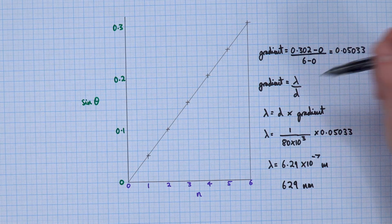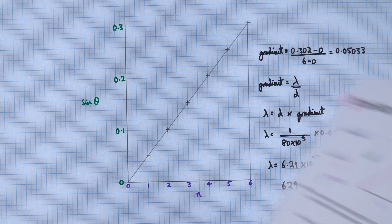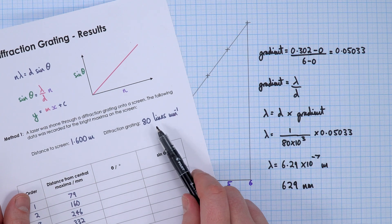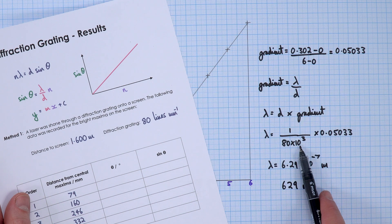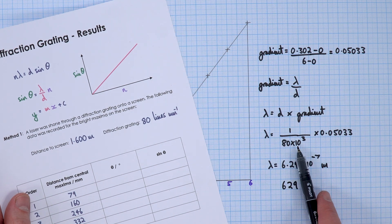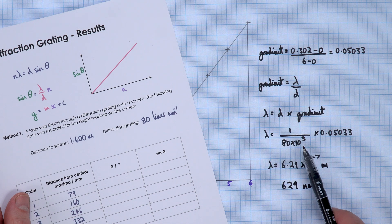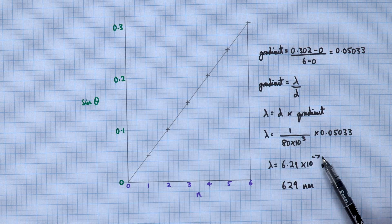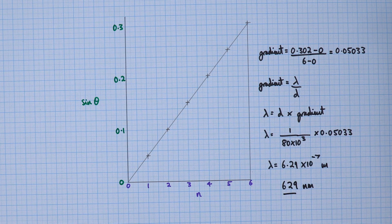A mistake I've made before is just putting in the value of d as 80, but that's not right — that's how many lines there are per millimetre. So if you multiply by 1000, we get the number of lines per metre, and the spacing d is 1 over that. So you've got 1 over 80 times 10 to the 3, times this number, which gave me 6.29 times 10 to the minus 7, or 629 nanometres.